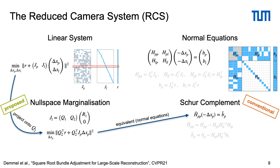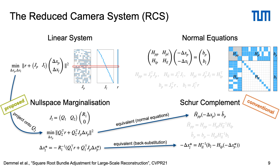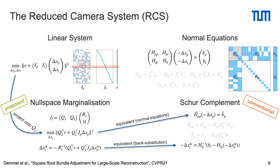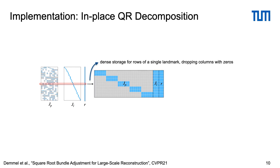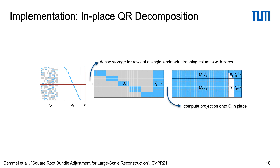While null space marginalization has been used in odometry filters and GraphSLAM, we also efficiently compute optimal landmark updates once we have solved for cameras. This step is algebraically equivalent to back substitution with the Schur complement. In our implementation, we store the Jacobian and residual rows corresponding to a single landmark densely, dropping columns with zeros. This enables efficient linear algebra operations, and the partial QR decomposition can then be performed in place.